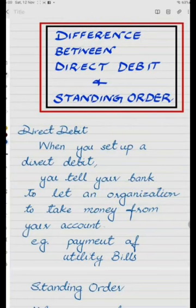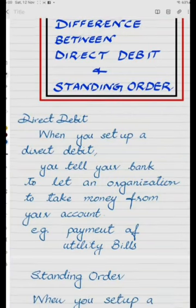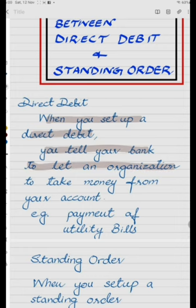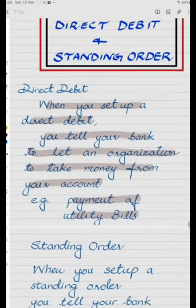Direct Debit: When you set up a direct debit, you tell your bank to let an organization take money from your account, like for the payment of utility bills.